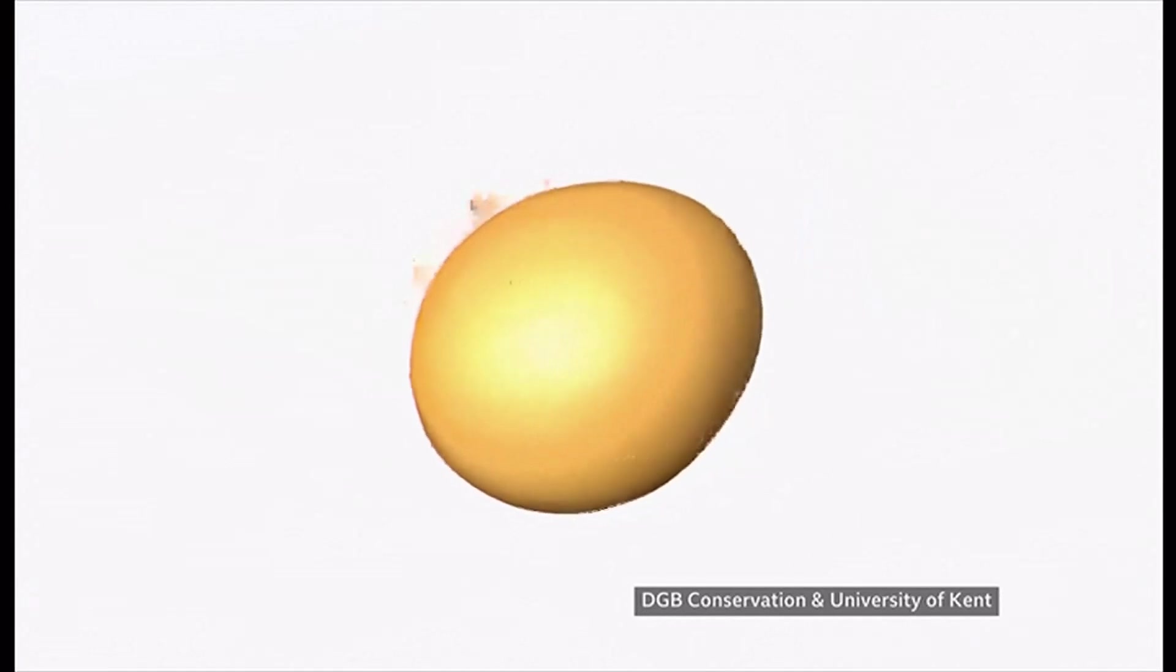Now, this CT scan shows what's inside. Incredibly, the pink coloring is some kind of liquid, possibly even the yolk and white of the egg. Finding an intact Roman egg is amazing, but one with liquid contents as well. Just how unique is this?